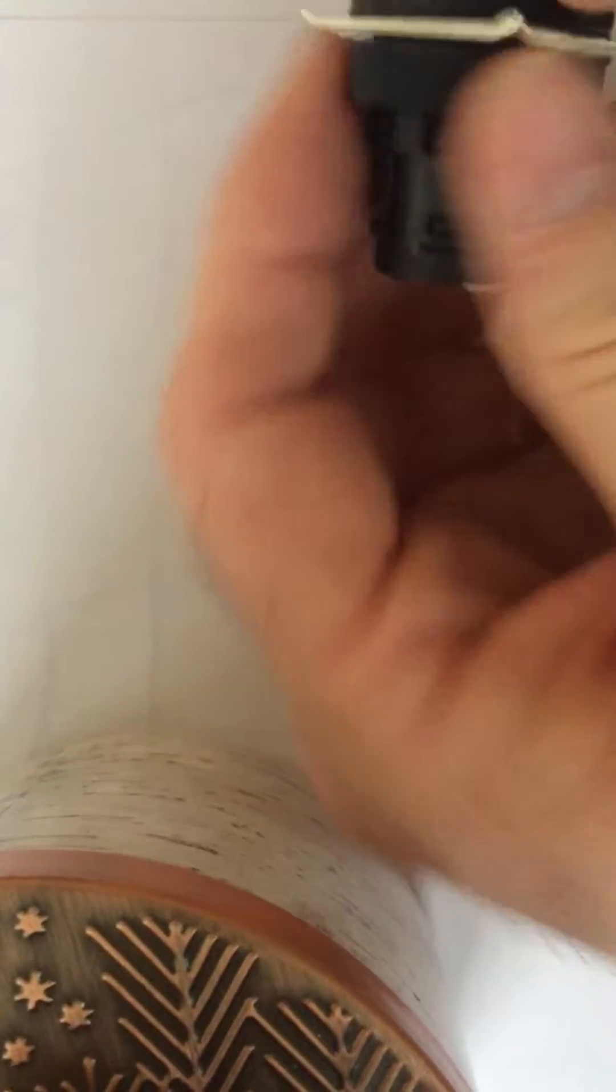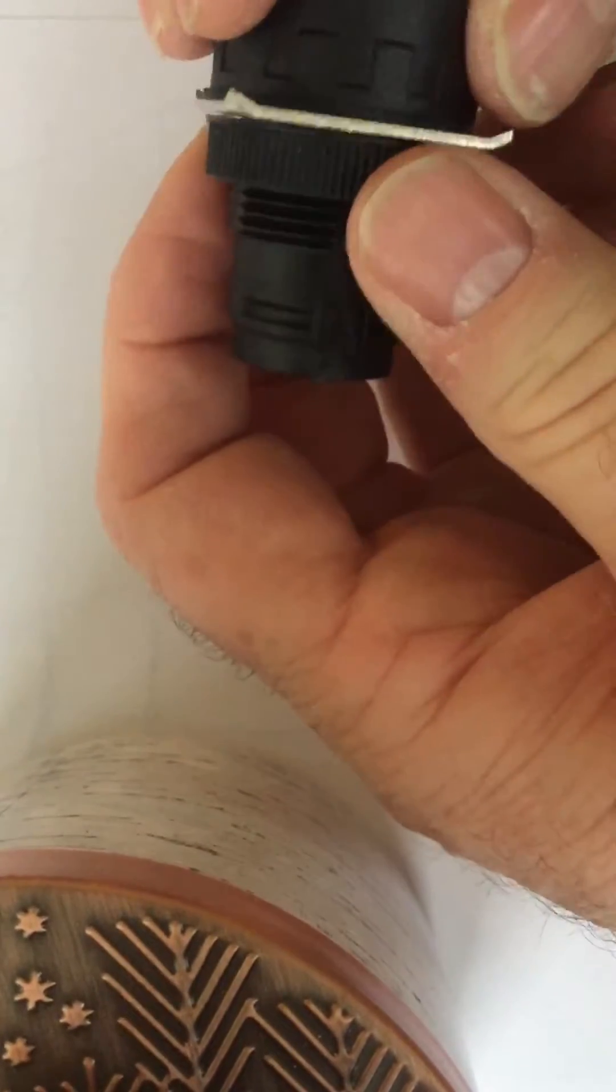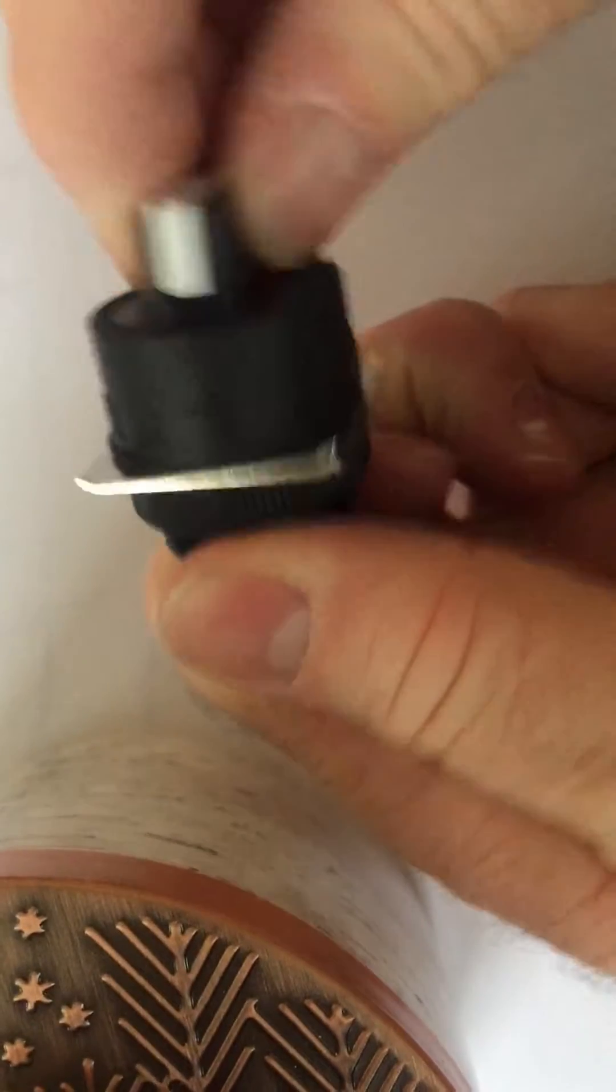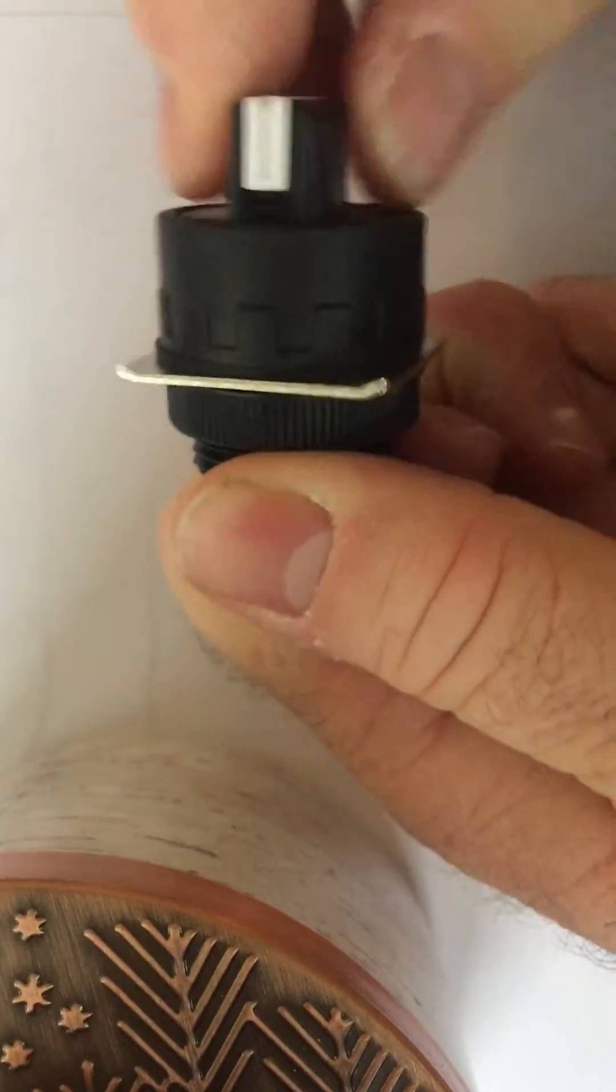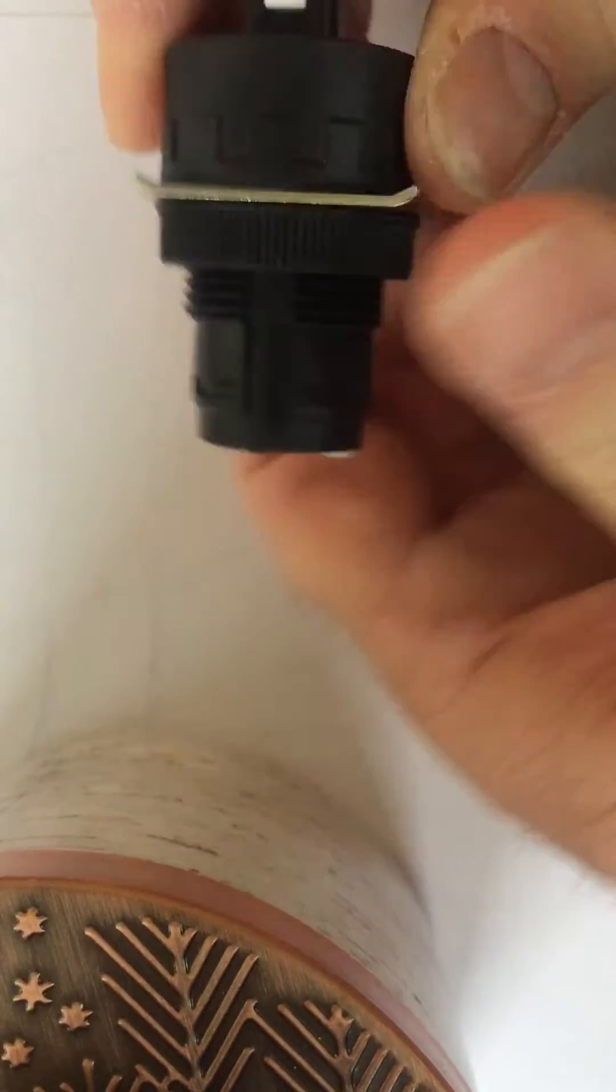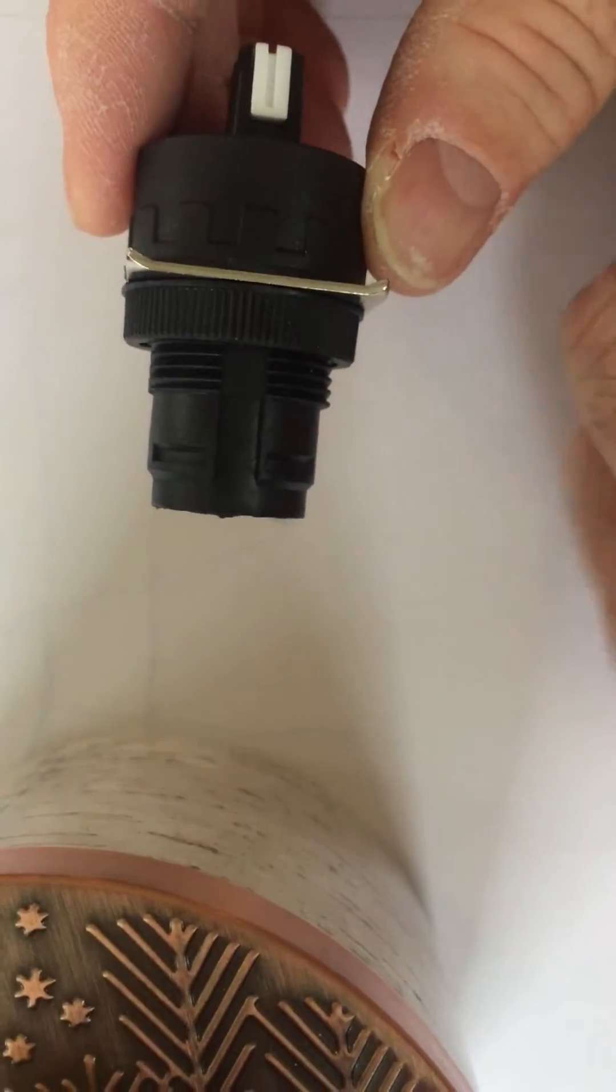Now, once you get to this point, before you crank it all the way down, make sure you got this pointing in the direction you need to go. Then it should be attached to the machine.